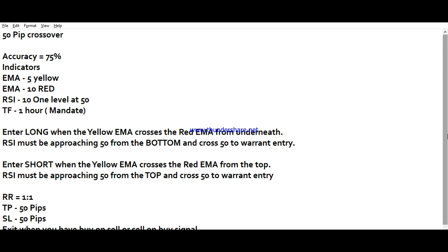It's called the 50 Pips Crossover, which has an accuracy of more than 75 percent. It's a purely technical strategy, so you might have to be a little cautious during economic and political events.